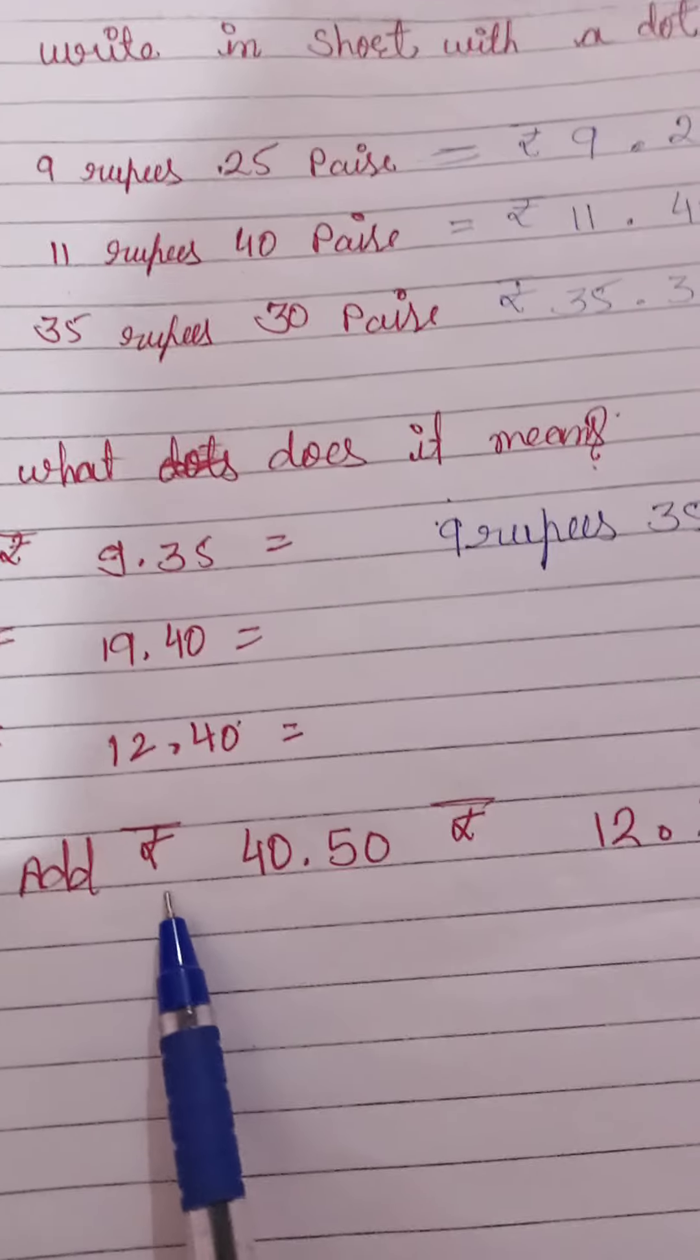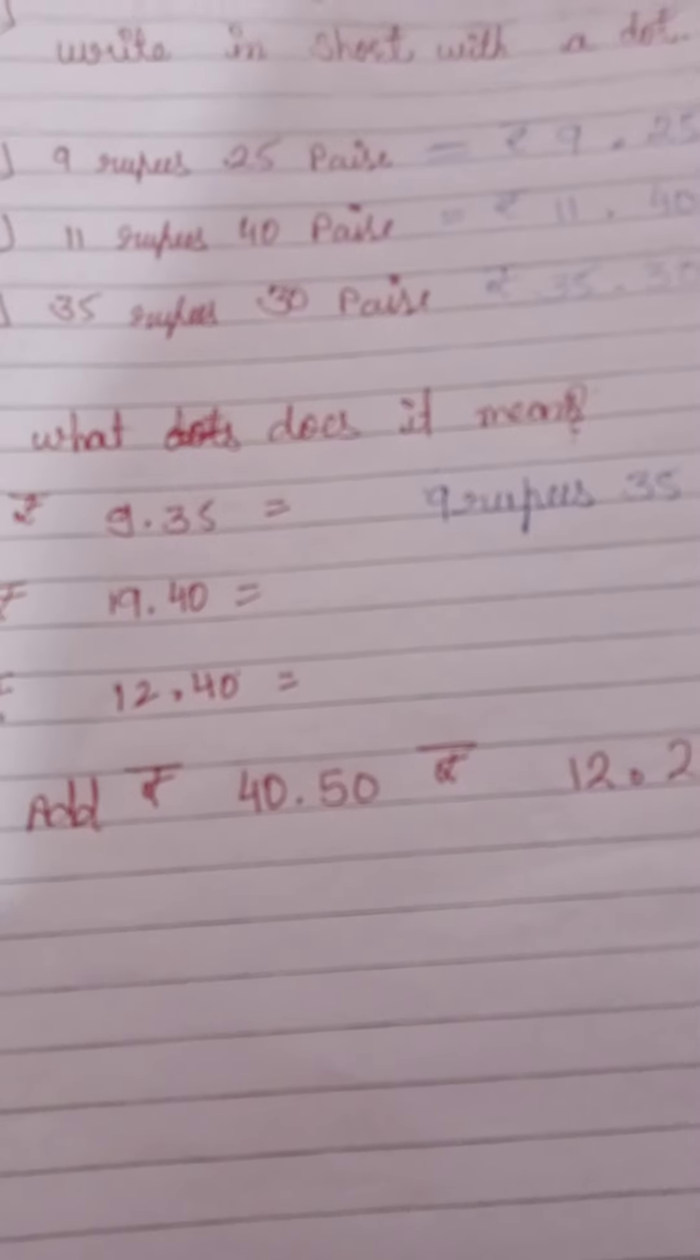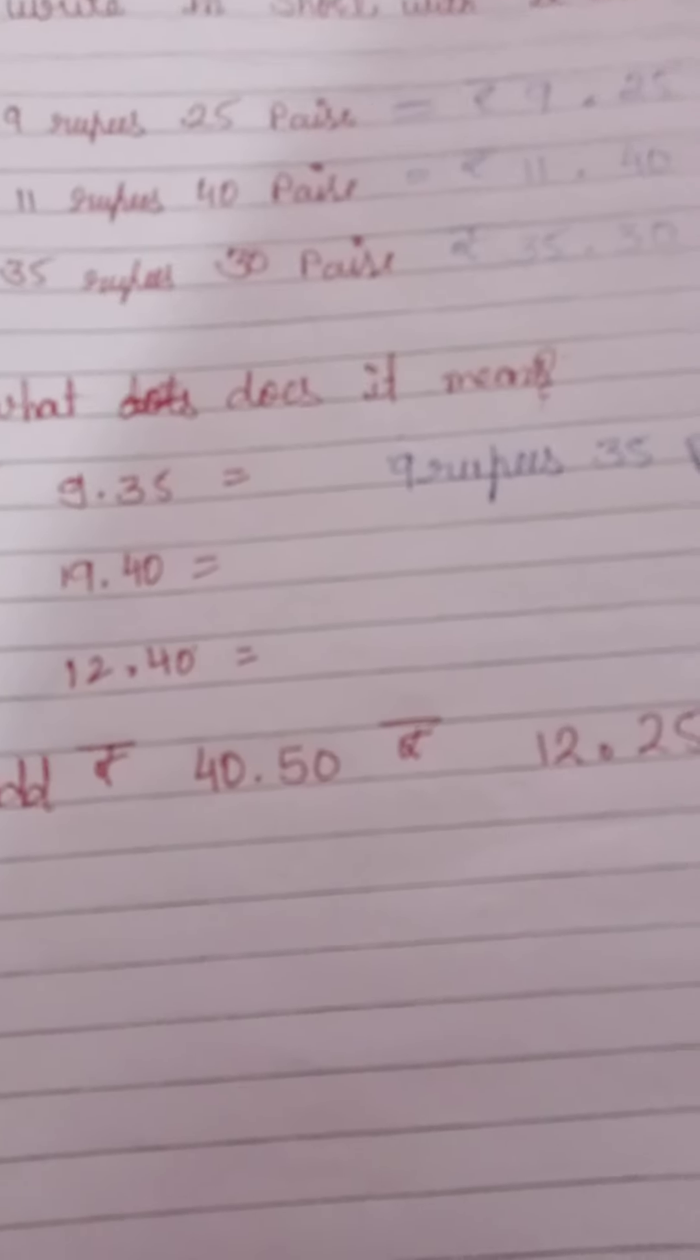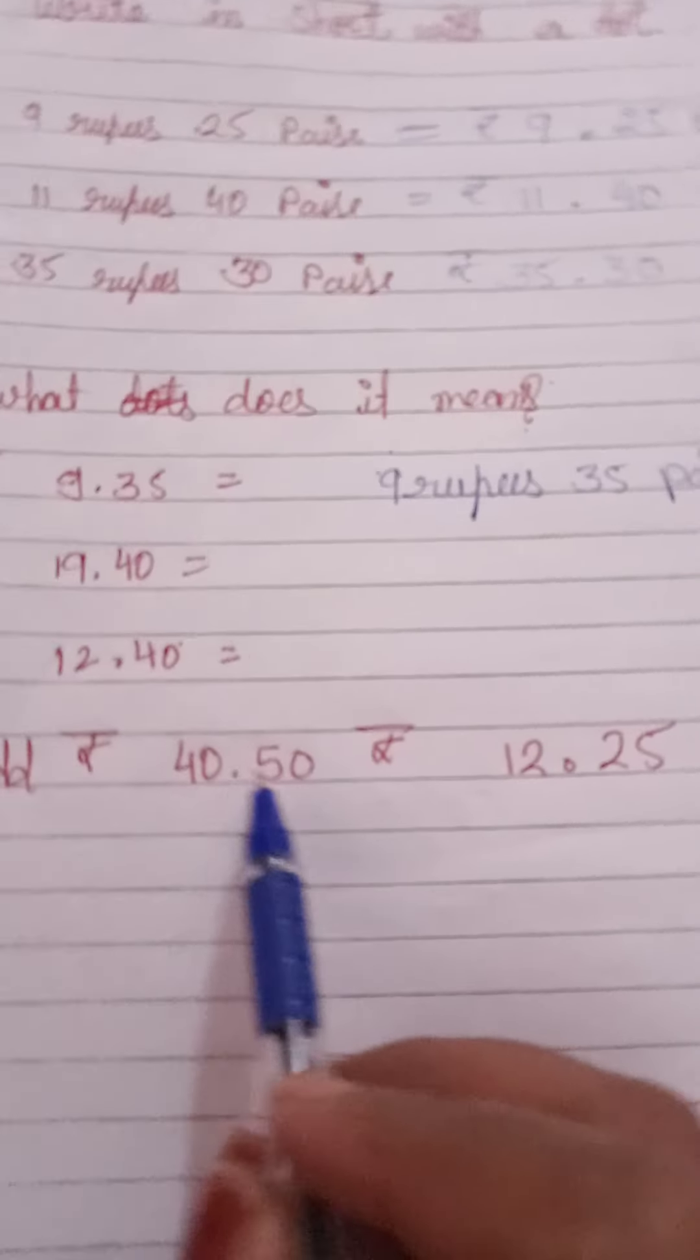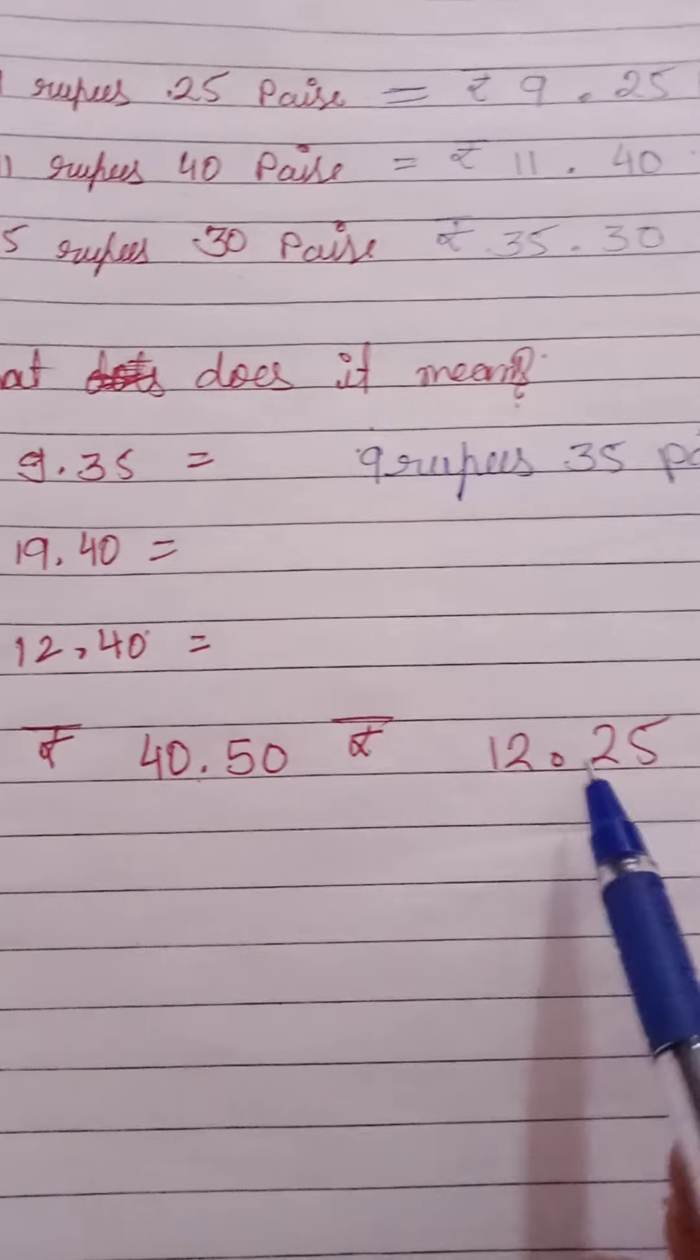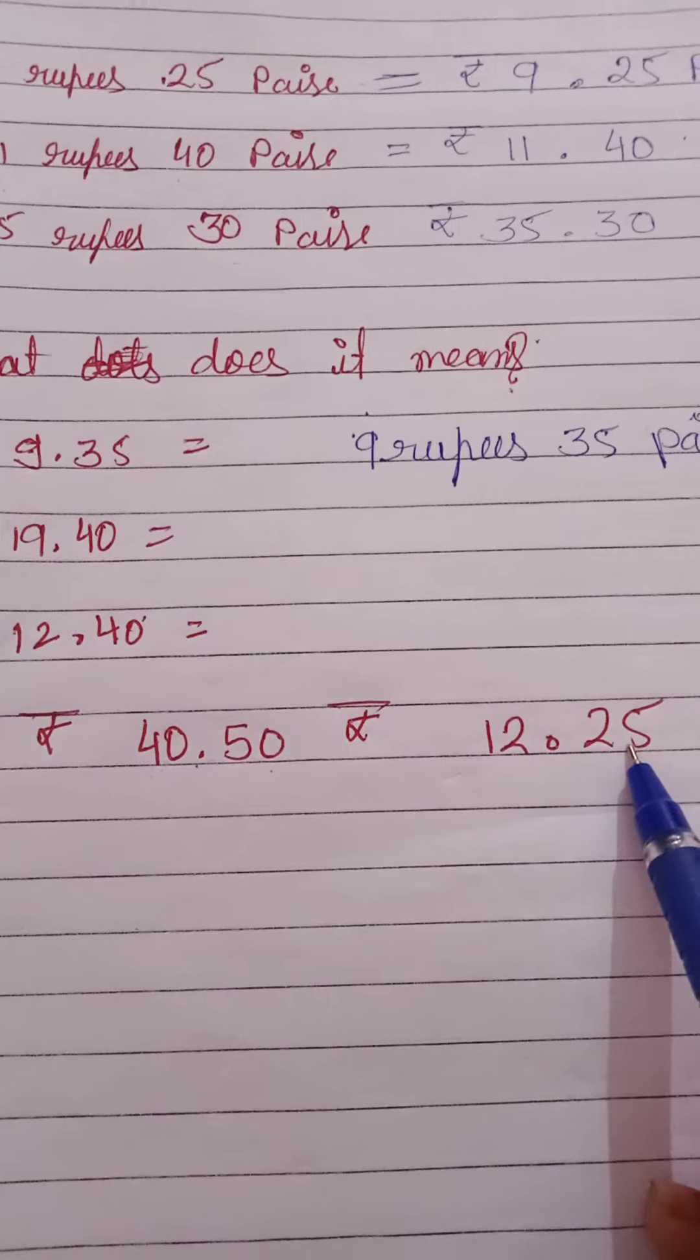Ab now, add rupees. Aapko yahaan pe kya karna hai, addition karna hai. To jab bhi aap add karoge na, maine kya bola, to usko pehle arrange karoge, taaki koi bhi problem na ho. Jab answer aap laoge to correct answer aayega. So add rupees. To aapko sabse pehle kya karna. Ab hum log jaan chuke hain ki dot ke baad wala kya hai - paise. Dot ke baad wala kya hai - paise.